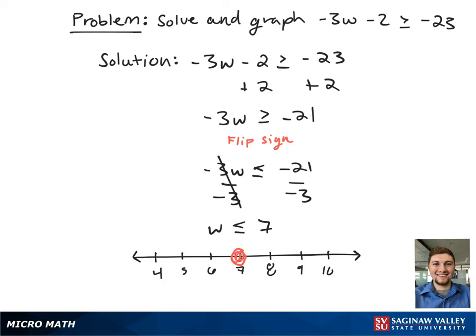On the number line, this looks like a closed circle, since w is less than or equal to 7, going left towards negative infinity.